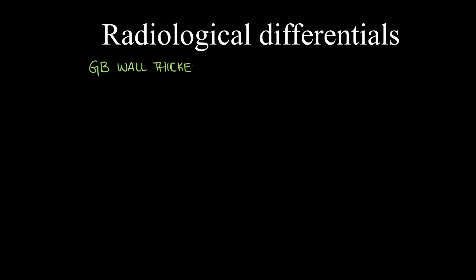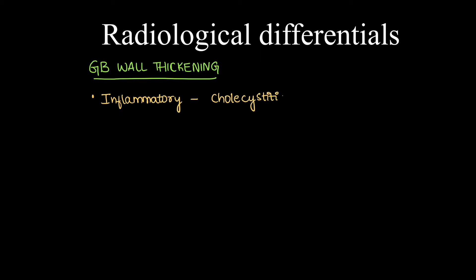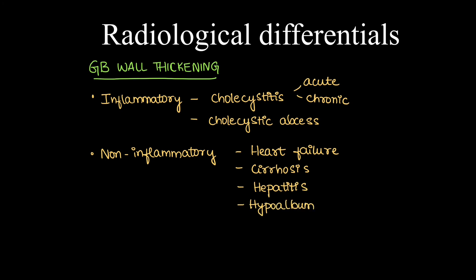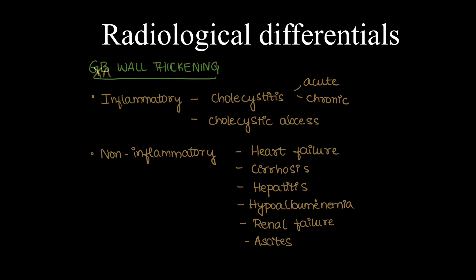Coming to the important part — radiological differential diagnosis for GB carcinoma. If it presents as wall thickening, there are multiple causes. Inflammatory causes include acute and chronic cholecystitis, and cholecystic abscess can also present with a thick wall. Non-inflammatory causes for GB wall thickening include heart failure, cirrhosis, hepatitis, hypoalbuminemia, and renal failure — all five of these cause ascites which leads to reactive wall edema.